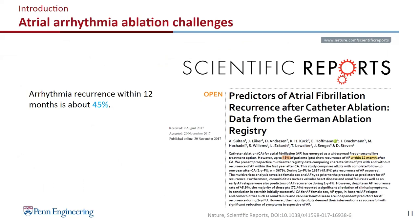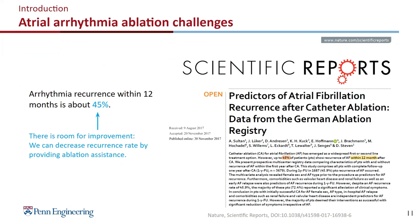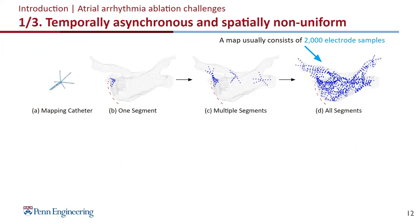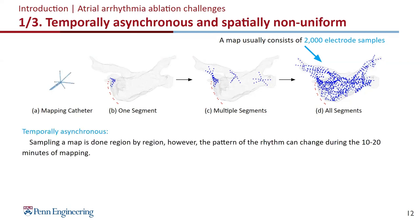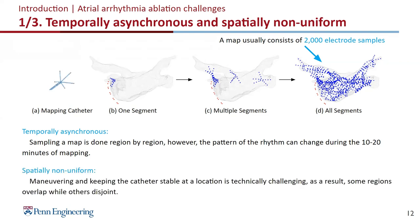Atrial arrhythmia ablation is challenging. Arrhythmia reoccurrence within 12 months is about 45% — that's very high — so there is room for improvement. We think there are mainly three challenges. The first is about data sampling. One problem is that data samples are temporally asynchronous: the samples are acquired section by section by the mapping catheter, so the physician maneuvers to different regions and they are acquired at different times. The pattern of the arrhythmia can change during this 10 to 20 minutes of sampling. The other problem is that samples are spatially non-uniform because maneuvering and keeping the catheter at the same location is technically challenging, so some regions overlap and some are disjoint.